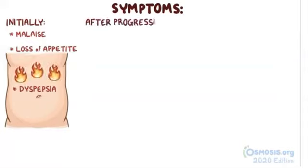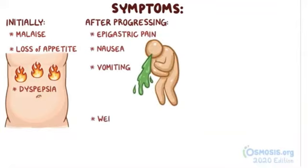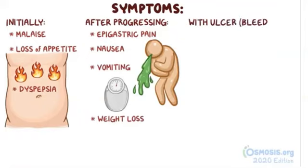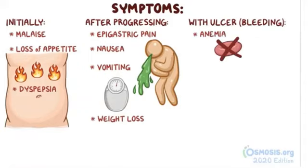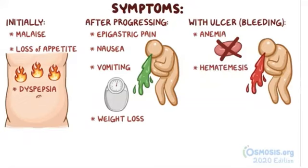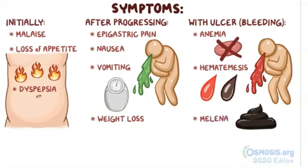Once the disease progresses, the main symptoms include epigastric pain, nausea, vomiting, and weight loss. In addition, gastric cancer can ulcerate and bleed. If there's significant blood loss, this can cause anemia. Also, the accumulation of blood in the stomach can cause hematemesis, or vomiting of blood. This can be bright red blood or have a darker color like coffee grounds when the red blood cells have been broken down by gastric acid. Finally, there could be melena, where the discolored blood can also appear in stool, making it black.